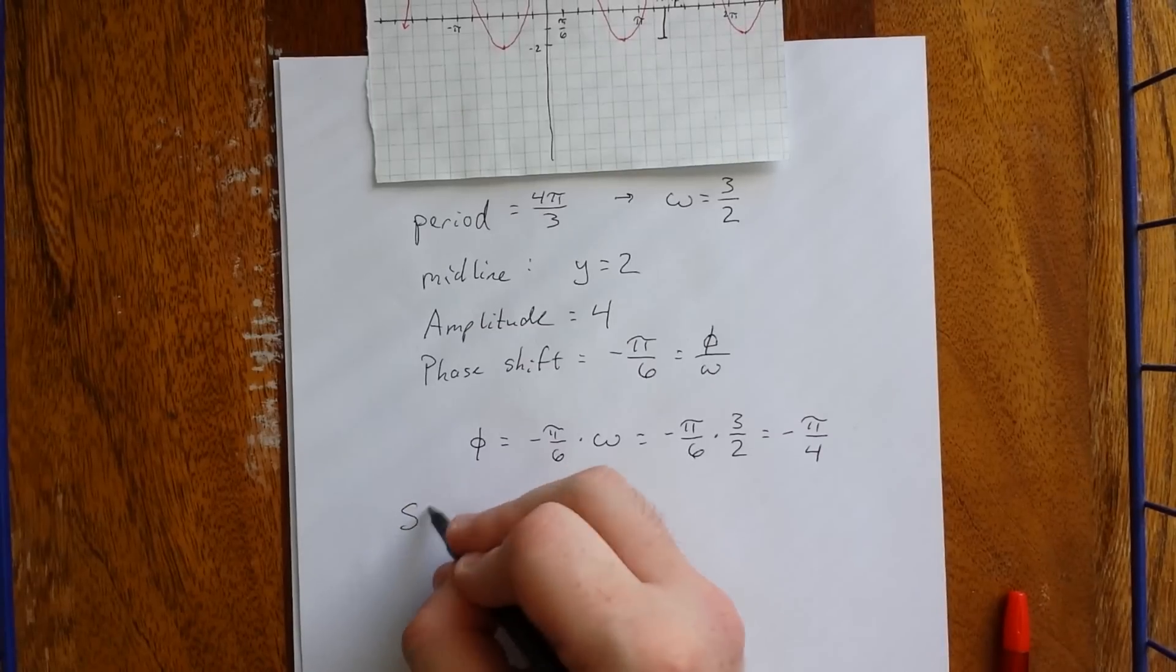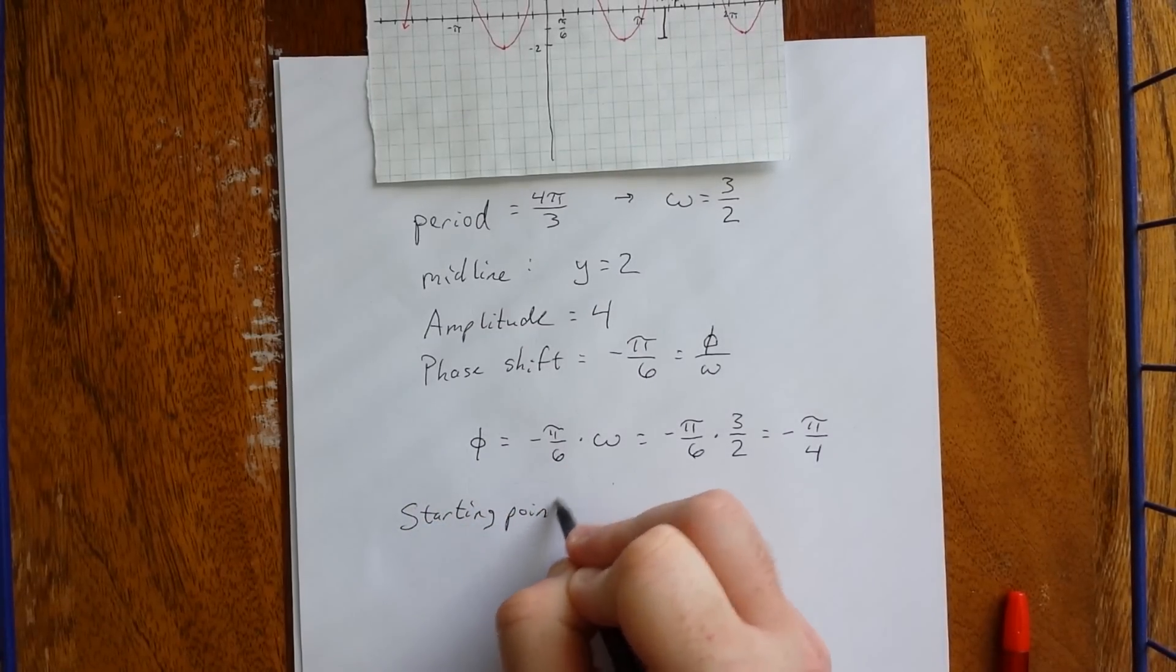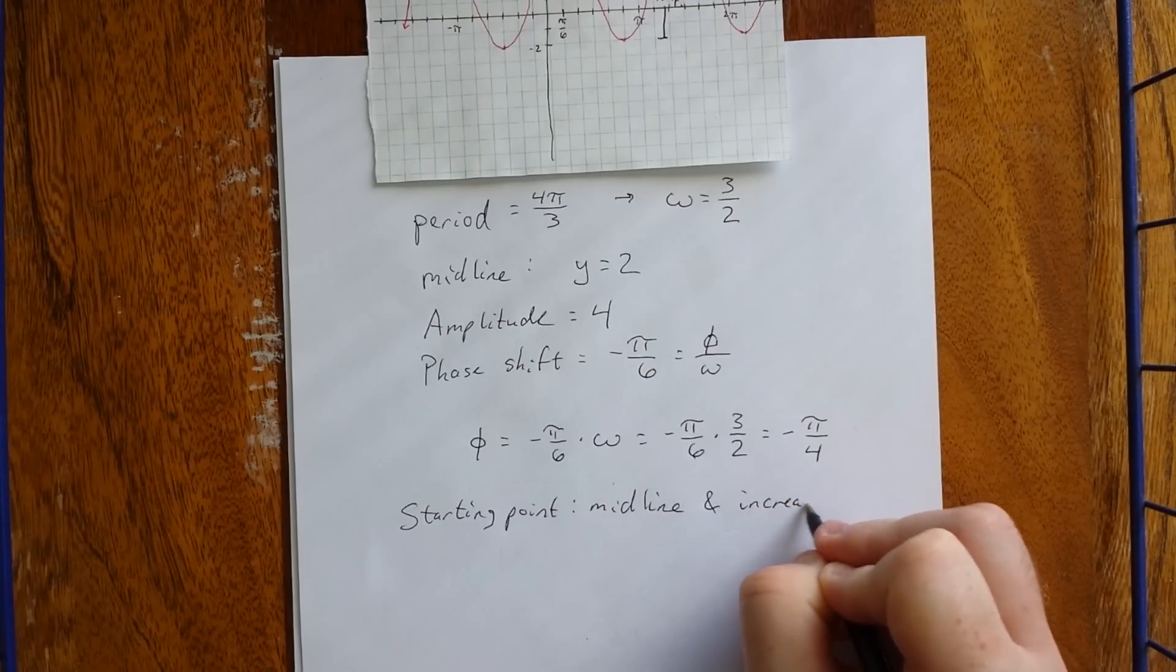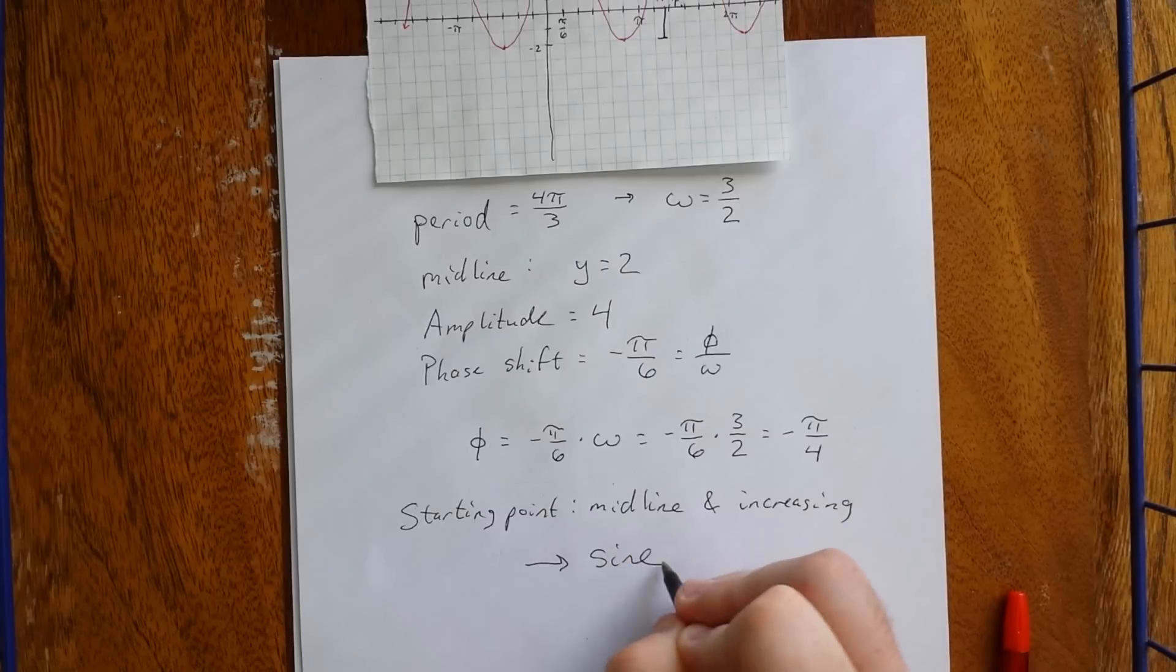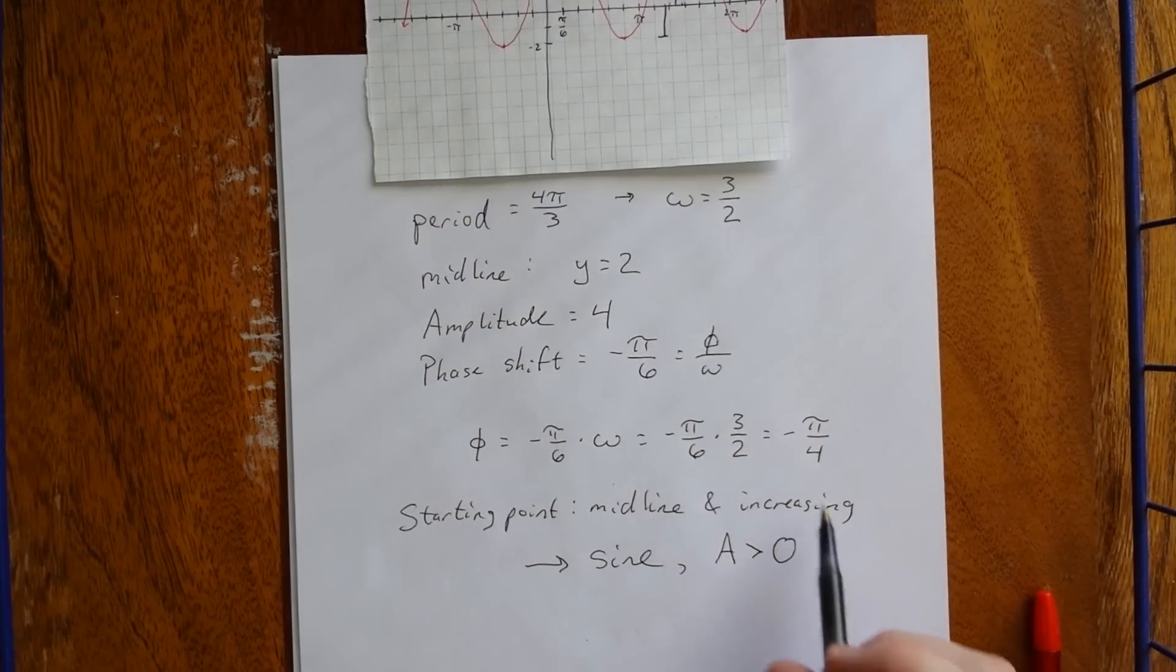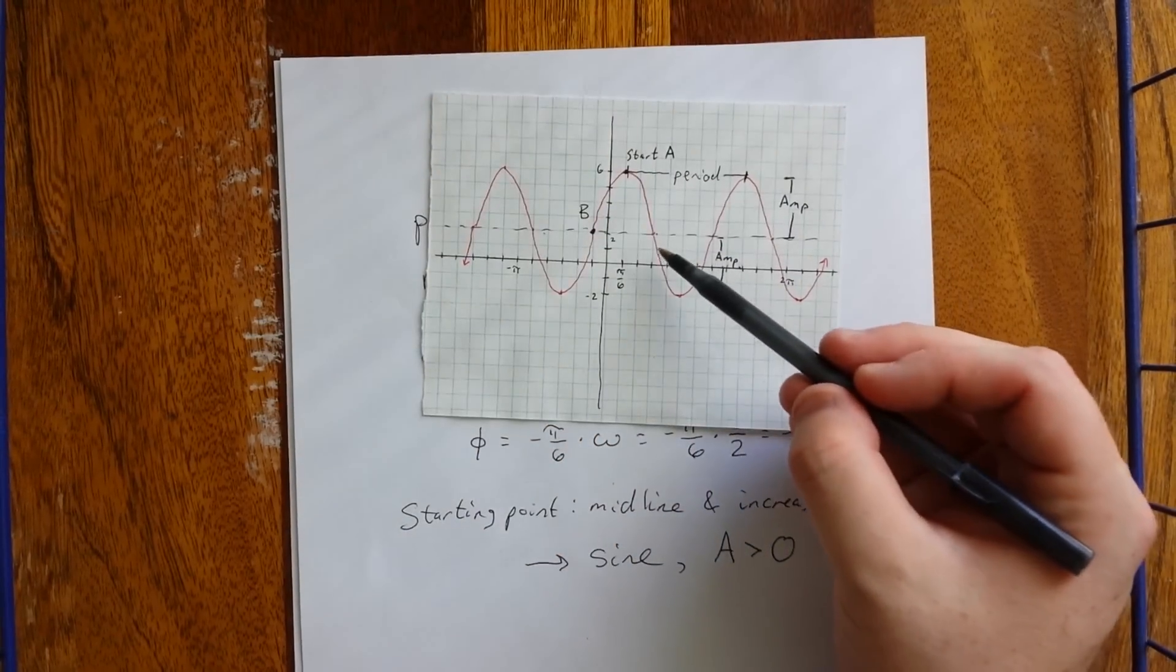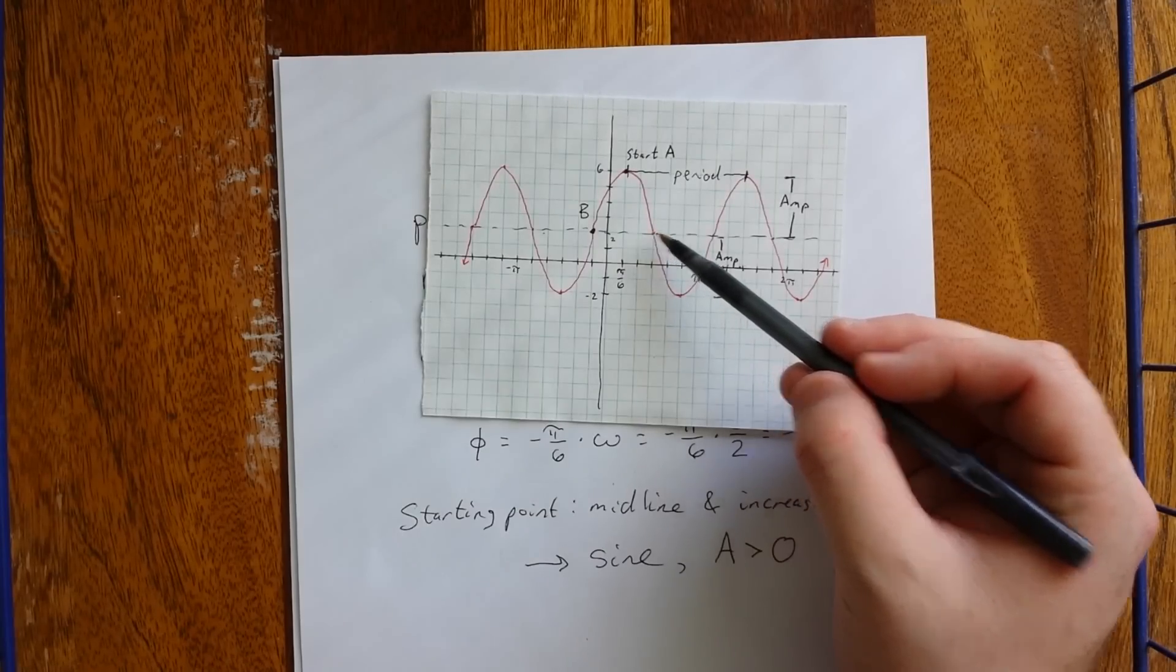This time, our starting point is at the midline and increasing, which means that we are going to be using a sine graph and that A is positive. Midline means sine, increasing means A is positive. If we were decreasing through the starting point, like say at this point right here, then we would use a negative value for A.